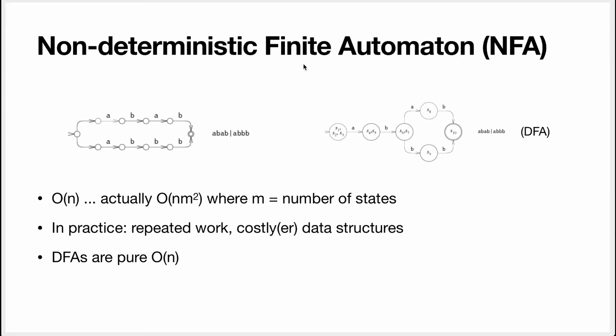So a NFA is a non-deterministic finite automata. What does it mean to be non-deterministic? It means that we can have multiple transitions that use the same letter. So here you see a NFA and a DFA for the same regex which is ABAB or ABBB.